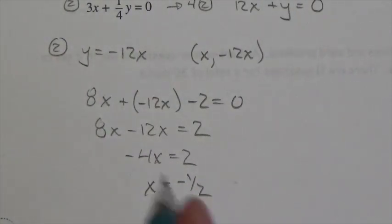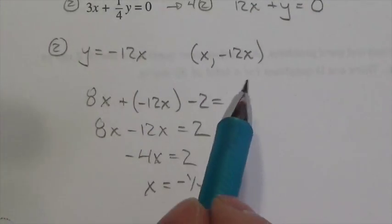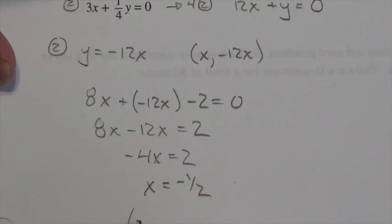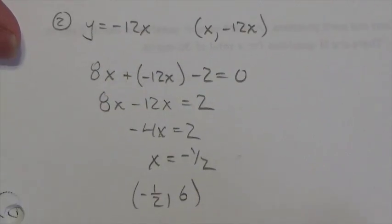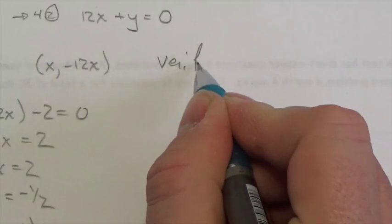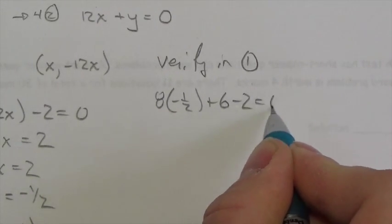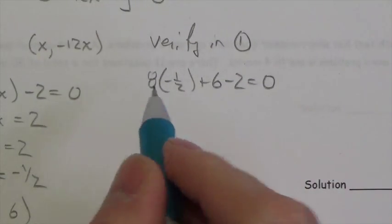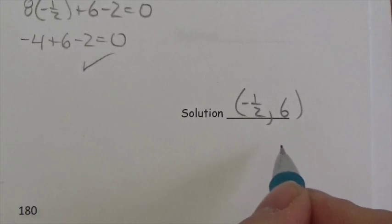I had a fraction in the question, so I'm not surprised there's a fraction in the answer. Taking negative 1 half back to equation two's point: negative 12 times negative 1 half — be careful, negative times negative is positive — so my point is negative 1 half comma positive 6. I got this from equation two, so I verify in equation one. That's 8 times negative 1 half plus 6 minus 2 equals 0. Negative 4 plus 6 is 2 minus 2 equals 0. Yes. The solution is (-1/2, 6).